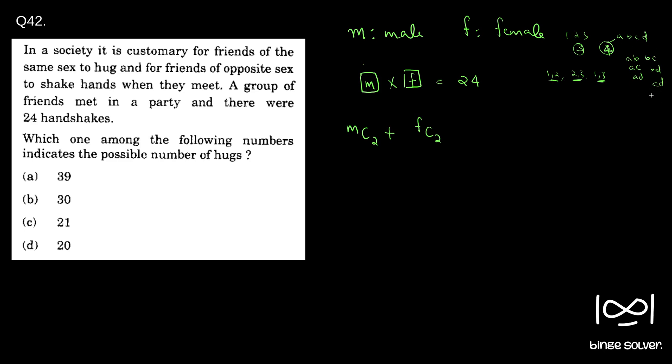So we can select such groups in 4C2 ways or 4 into 3 into 2 into 1. So we get 2 into 3, 6 ways, which is this one, two, three, four, five, six. These are the six. In this six group, AB hug each other, BC hug each other, AC hug each other, AD hug each other. Similarly, all these people hug each other. So this is how hugging happens in the party.